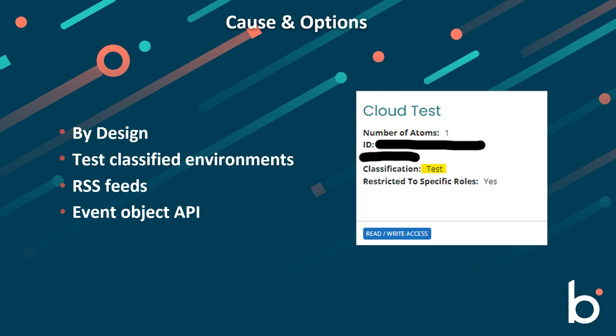Not receiving email alerts for test environments is by design and expected behavior. Processes deployed and atoms attached to environments with test classification do not generate email alerts about executions or about the status of the atoms. You will receive RSS feeds, and additionally you can use the event object in the API to query notifications. Hopefully you found this information useful — thank you for watching.